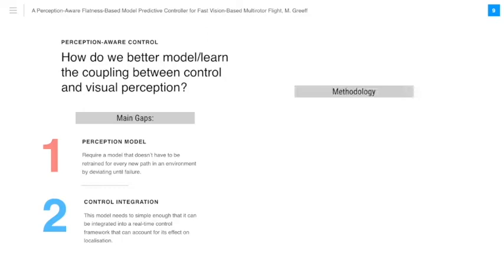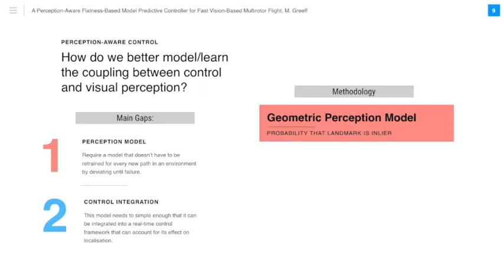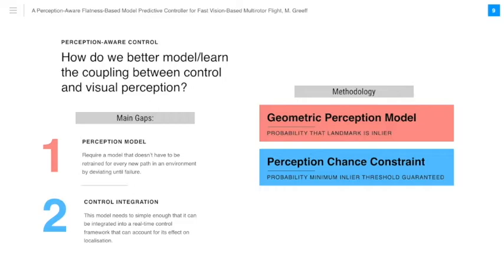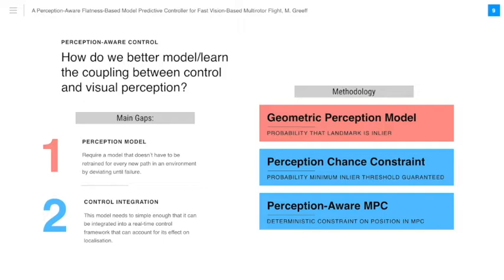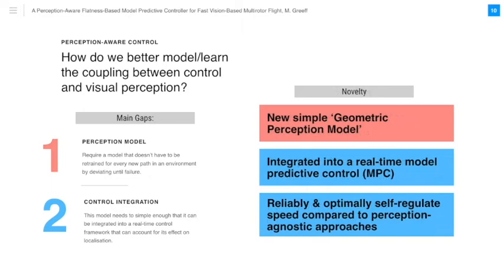We develop a simple geometric perception model that models the probability that a landmark is successfully matched and selected as an inlier. We use a perception chance constraint to ensure that a minimum number of localization inliers is guaranteed. We develop a perception-aware model predictive control, or MPC, by converting this perception chance constraint into a deterministic constraint on the position of our UAV. In this work, we present a novel, simple geometric perception model that allows us to integrate a perception constraint into a real-time model predictive control.